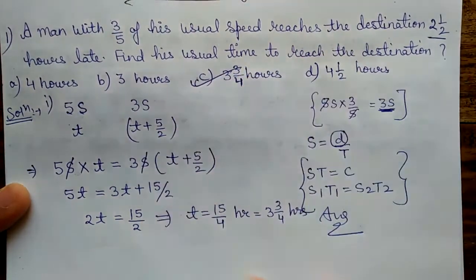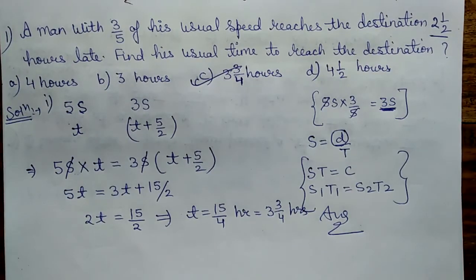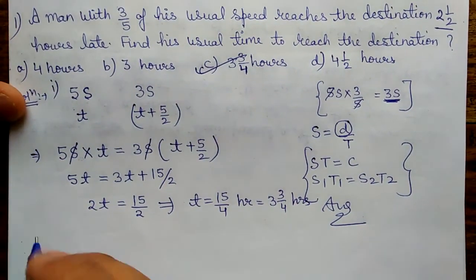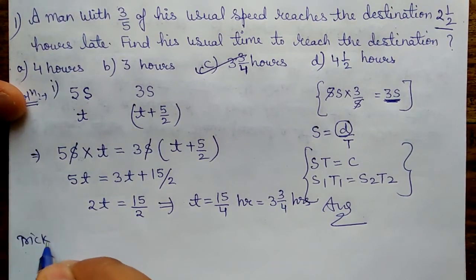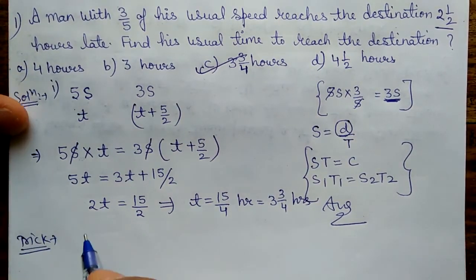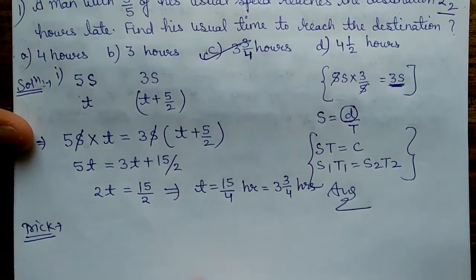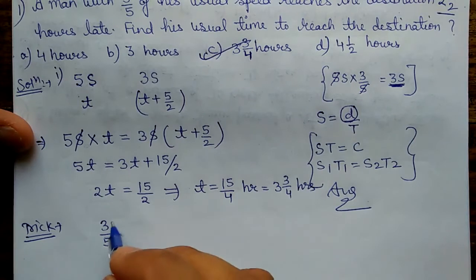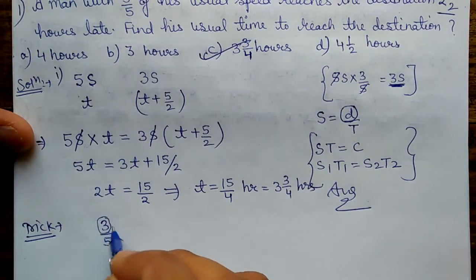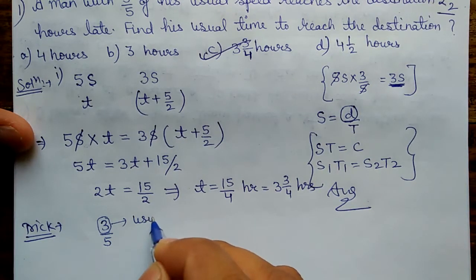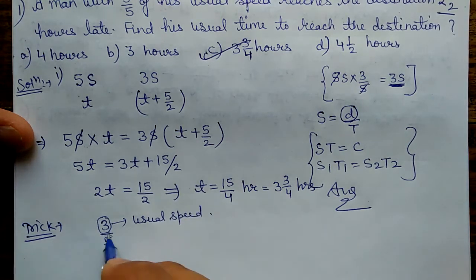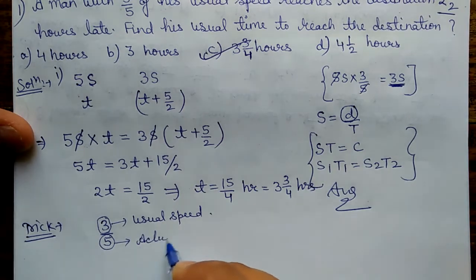Option C will be our answer. This is the method. Now if we solve this question by trick — 3/5 of the usual speed is given. Always remember: the numerator will be considered as the usual speed.